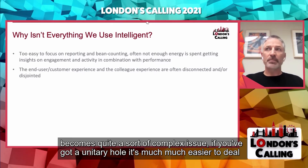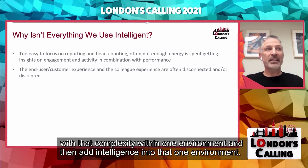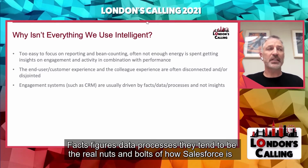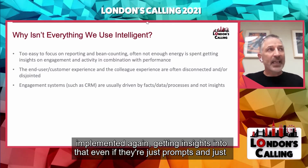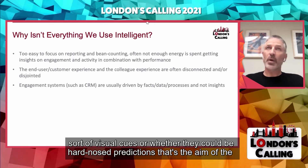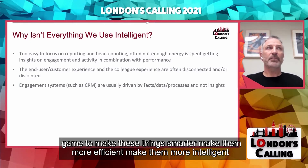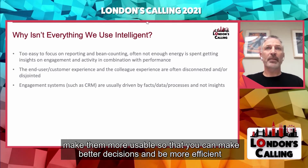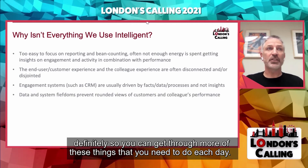If you've got a unitary whole, it's much, much easier to deal with that complexity within one environment and then add intelligence into that one environment. Facts, figures, data, and processes tend to be the real nuts and bolts of how Salesforce is implemented. Getting insights into that — whether they're just prompts and visual cues or hard-nosed predictions — that's the aim of the game: to make things smarter, more efficient, more intelligent, and more usable so that you can make better decisions.